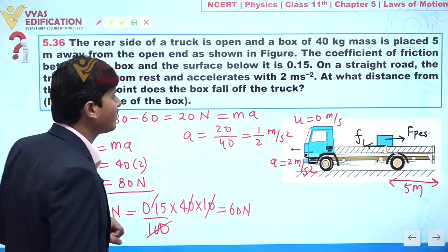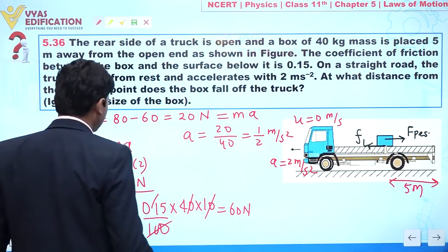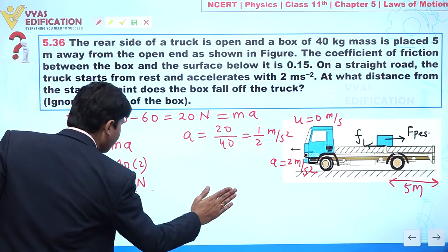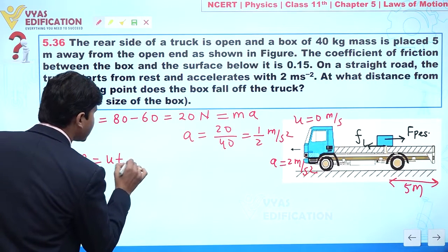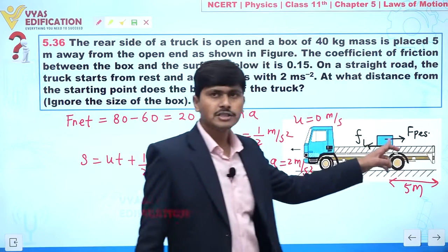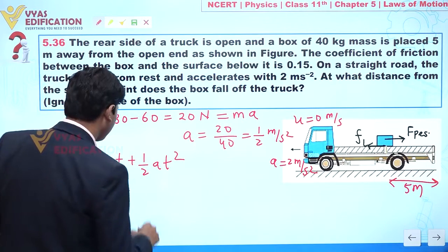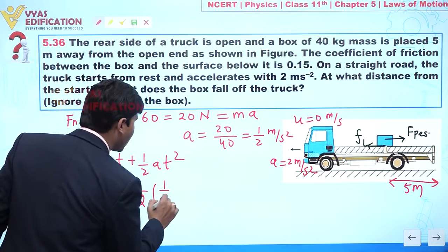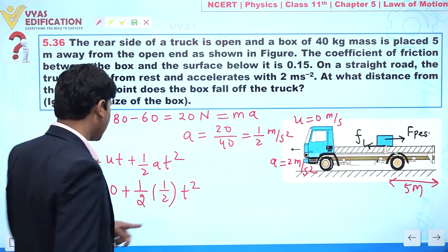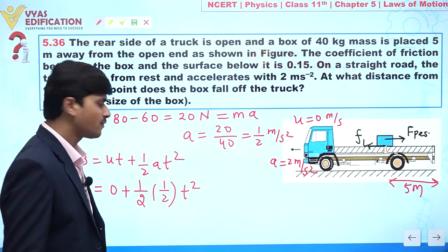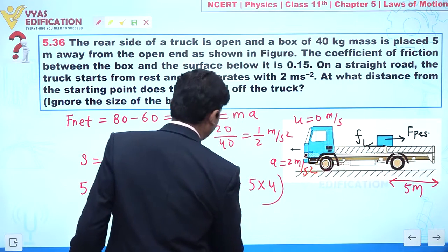Since acceleration is constant, we apply the equation of motion: s = ut + ½at². The distance covered by the box is 5 meters, initial velocity is 0, and acceleration is 0.5 m/s². So: 5 = ½ × 0.5 × t², giving t² = 5 × 4 = 20.